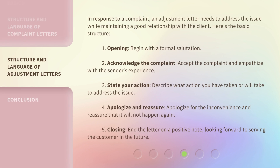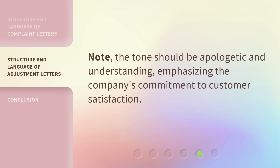In response to a complaint, an adjustment letter needs to address the issue while maintaining a good relationship with the client. Here's the basic structure: 1. Opening — begin with a formal salutation. 2. Acknowledge the complaint — accept the complaint and empathize with the sender's experience. 3. State your action — describe what action you have taken or will take to address the issue. 4. Apologize and reassure — apologize for the inconvenience and reassure that it will not happen again. 5. Closing — end the letter on a positive note, looking forward to serving the customer in the future. Note: the tone should be apologetic and understanding, emphasizing the company's commitment to customer satisfaction.